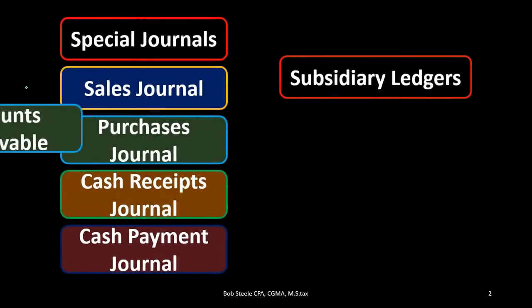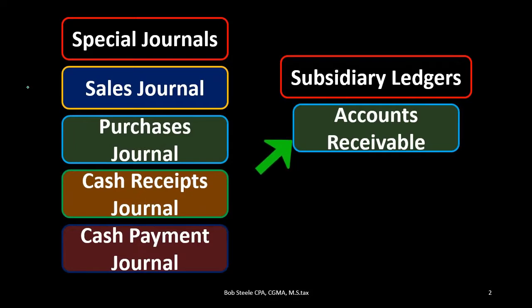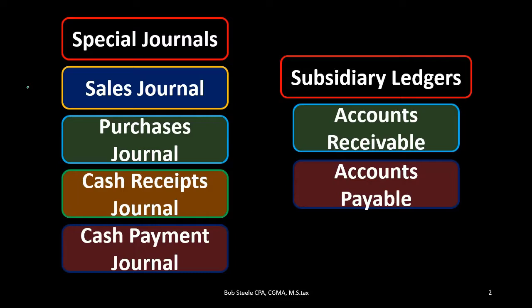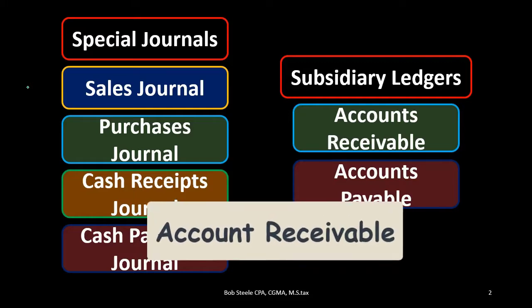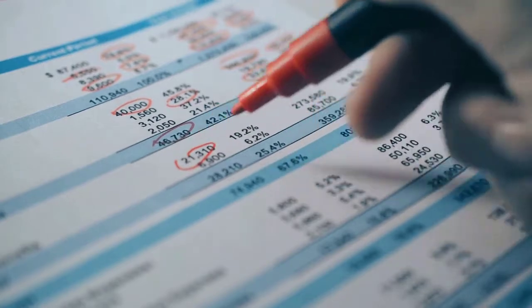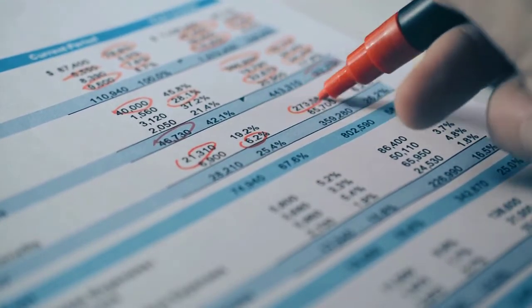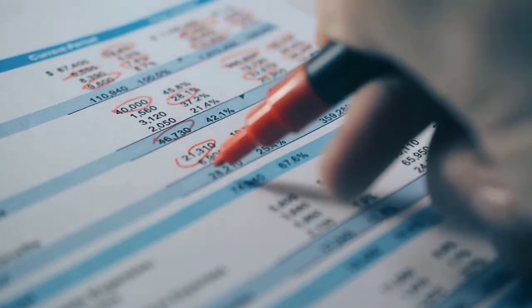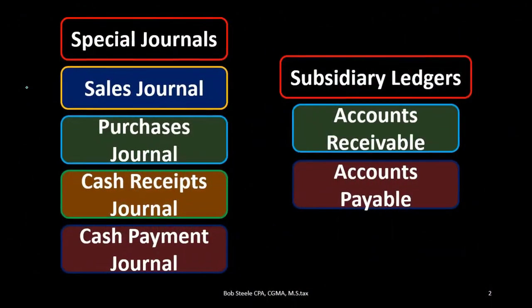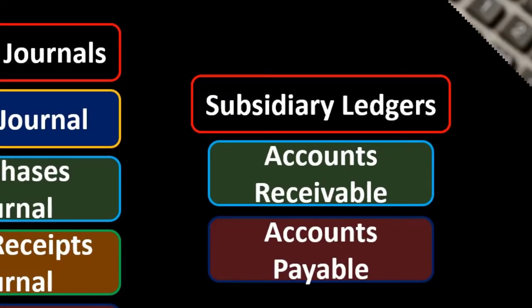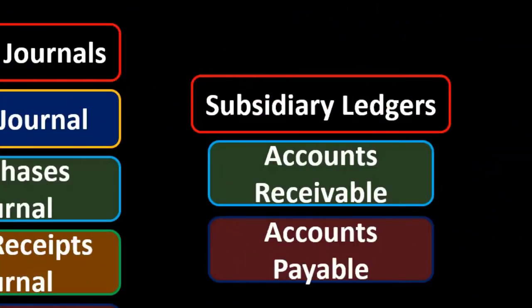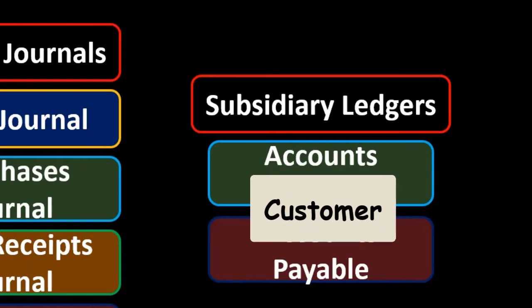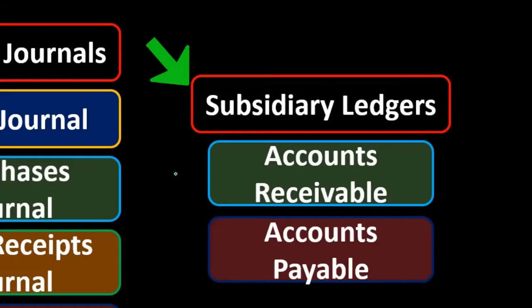The examples that we will be working with are the accounts receivable subsidiary ledger and the accounts payable subsidiary ledger. The accounts receivable subsidiary ledger is going to give us more detail than we find on the balance sheet, the trial balance, or the general ledger. If we were to see an amount for accounts receivable on the balance sheet — say $10,000 — that would represent people owing the company $10,000. However, the fact that it's on the balance sheet doesn't give us a lot of detail. We could get more detail by going to the general ledger, which gives us detail by date. But what we really want is detail by customer, and in order to get that we need another type of ledger.